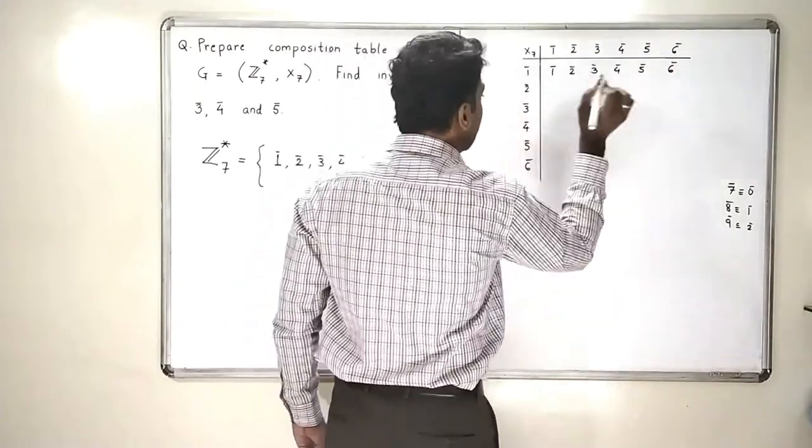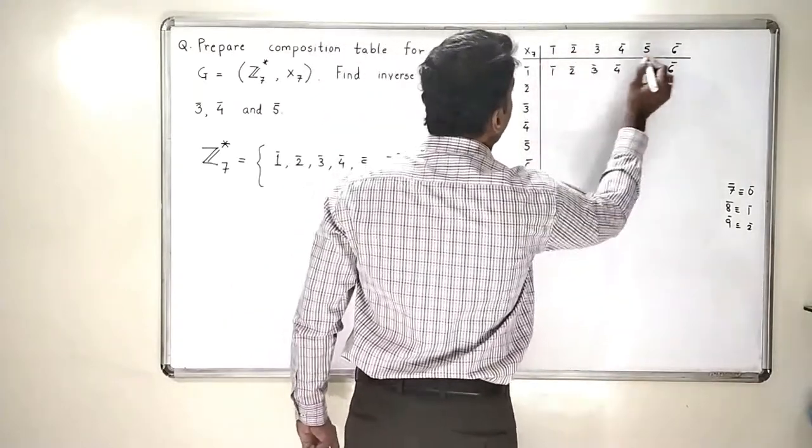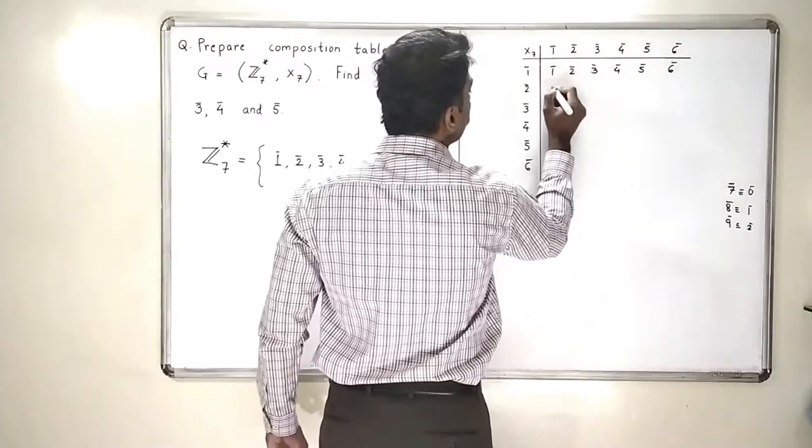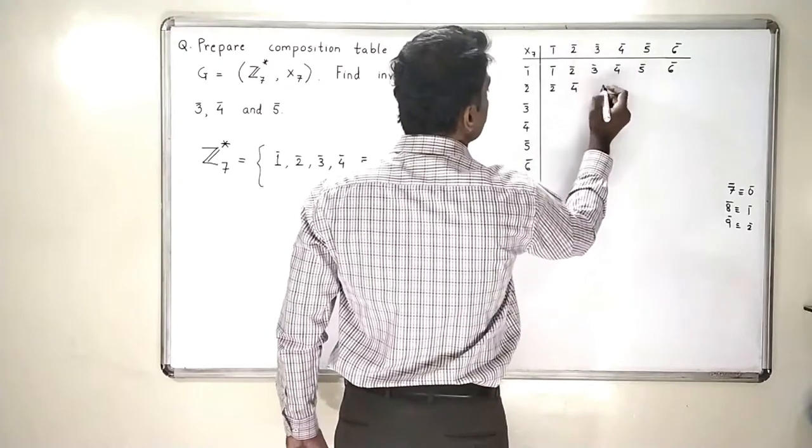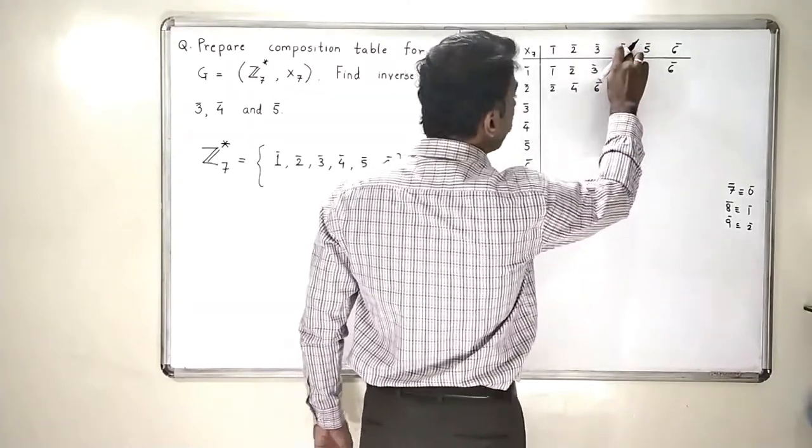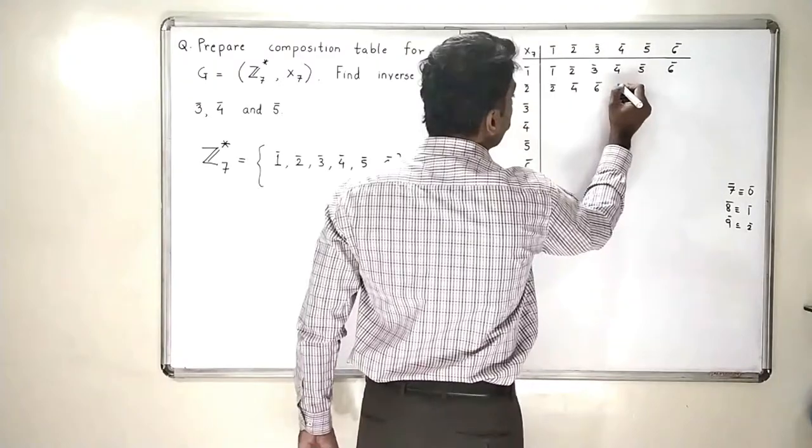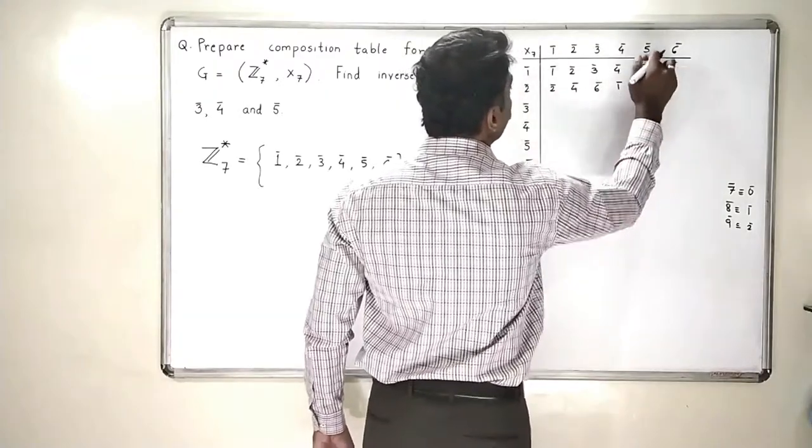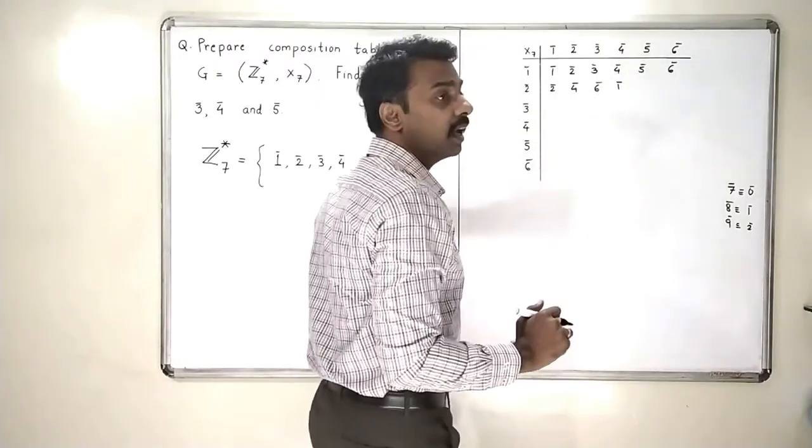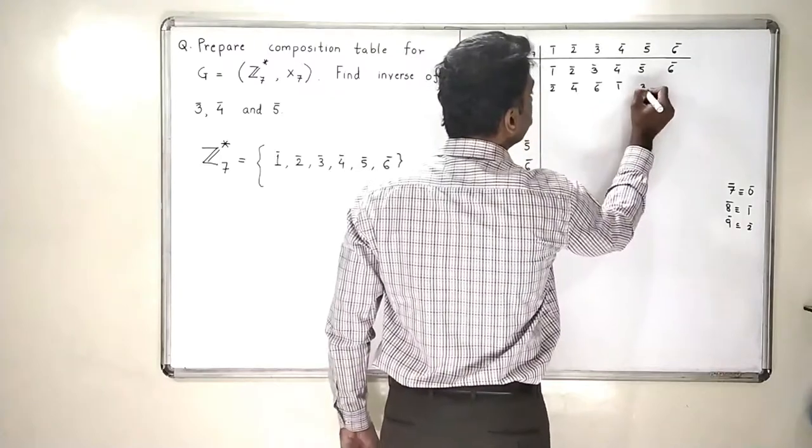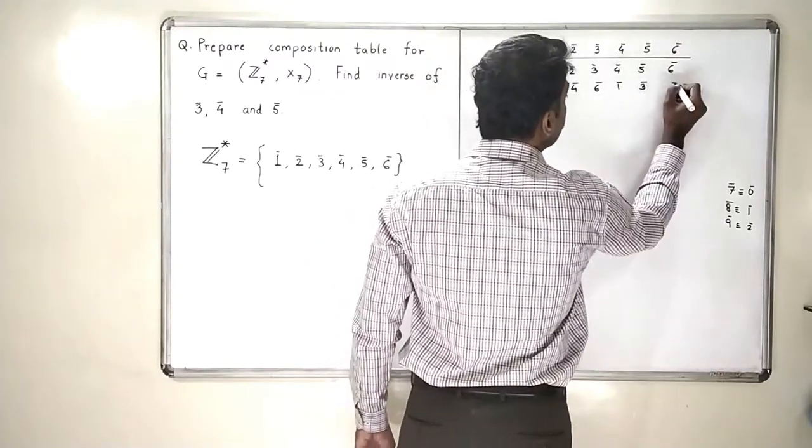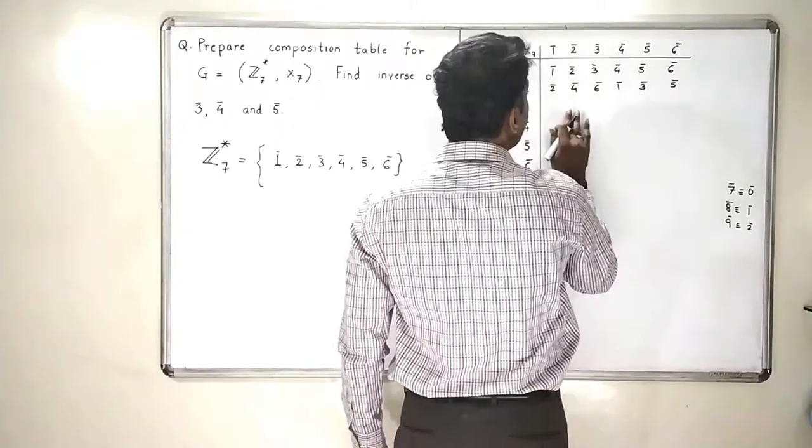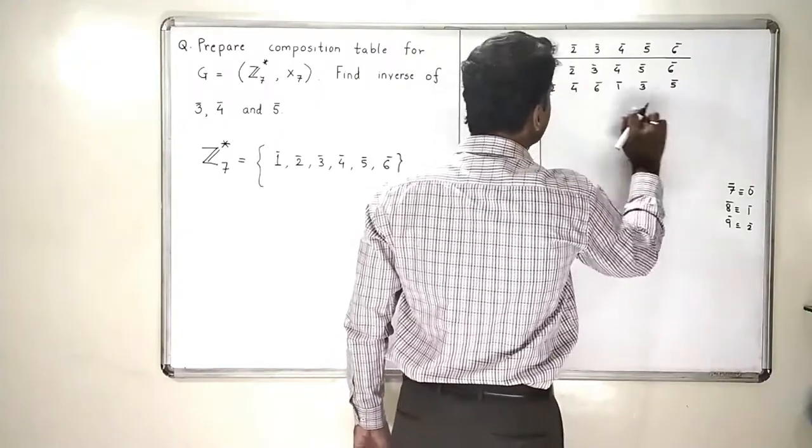Now, let me show you the second line. 2 bar multiplied by all of them. 2 bar into 1 bar is 2 bar, 2 into 2 is 4 bar, 2 into 3 is 6 bar, 2 into 4 is 8 bar, but 8 bar is 1 bar. 2 into 5 is 10 bar, but 10 bar will become 3 bar and 2 into 6 is 12 bar and 12 bar becomes 5 bar. In this way, I will now complete the table.